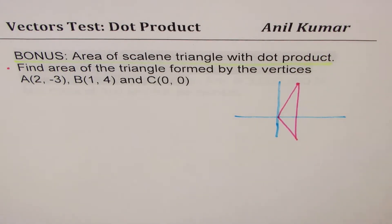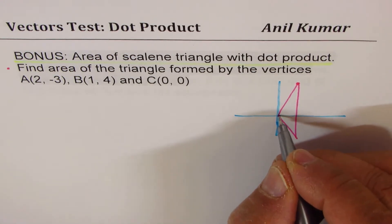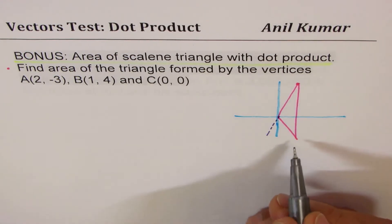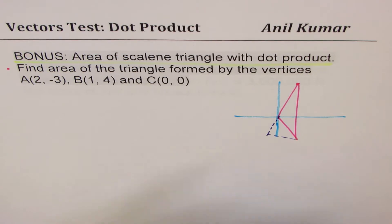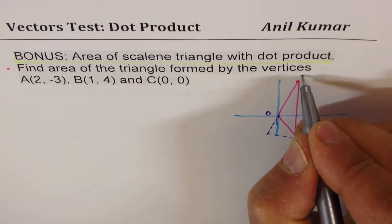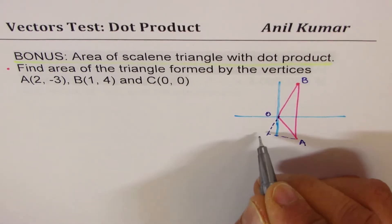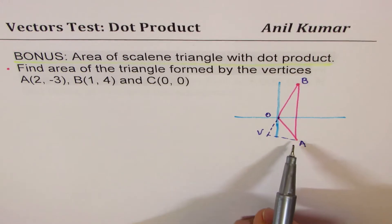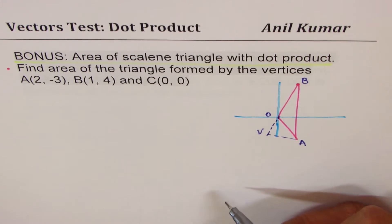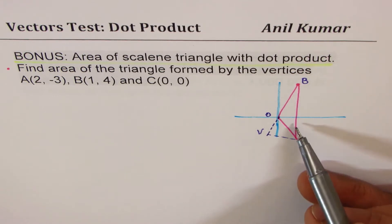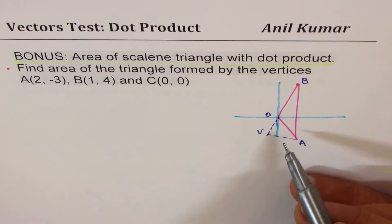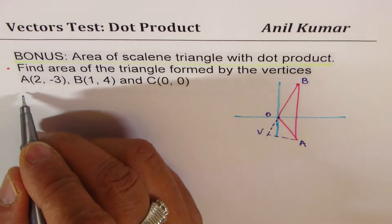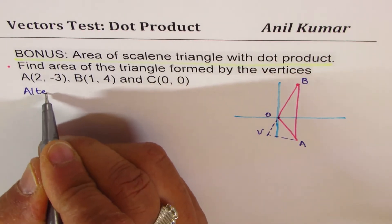One method is what we did in the last part of this video—you could find this side. Let me name that. Just as we did last time, we'll call it V. Magnitude of AV times half OB will give you the area of the triangle because that's the altitude. That's how you could find it, but here we'll talk about an alternate method.